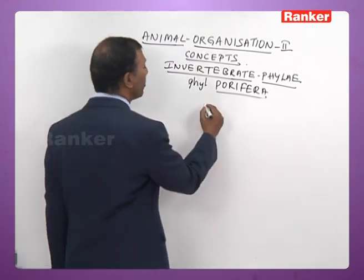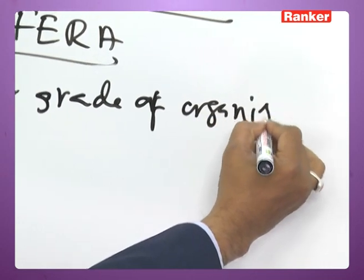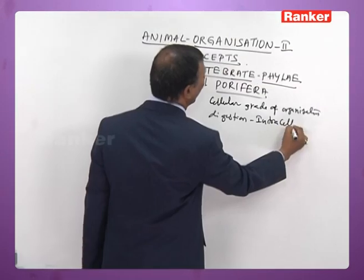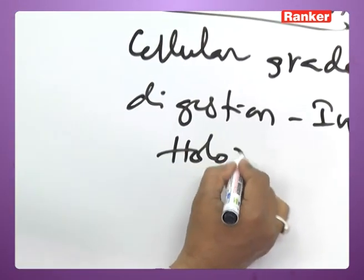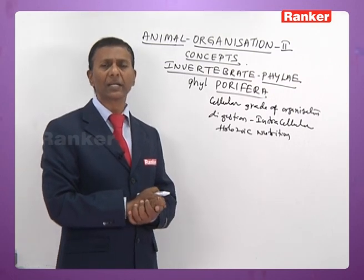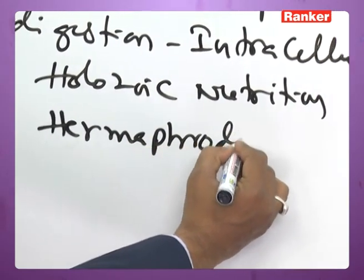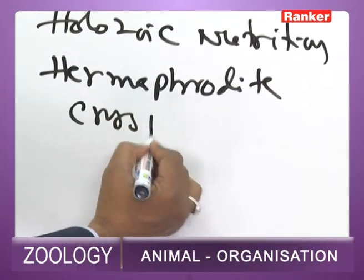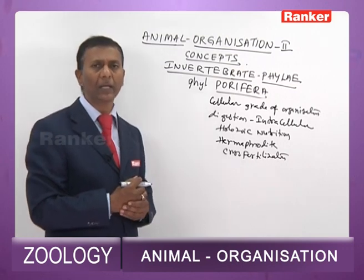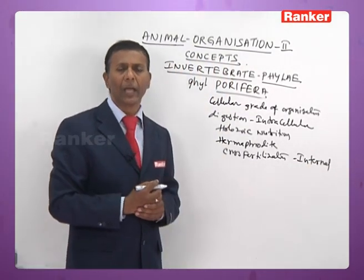The type of organization in Porifera is cellular grade of organization. The mode of digestion is intracellular digestion and the mode of nutrition is holozoic nutrition. In Porifera, both sensory cells and nerve cells are absent. All Porifera are hermaphrodite or bisexual, with cross-fertilization taking place. Cross-fertilization occurs due to either protandry or protogyny, and fertilization is internal.